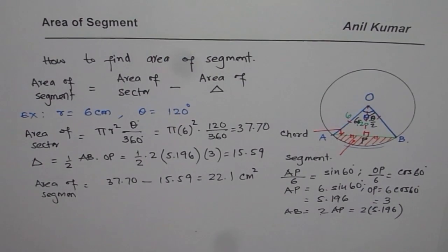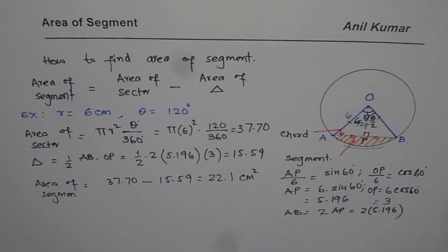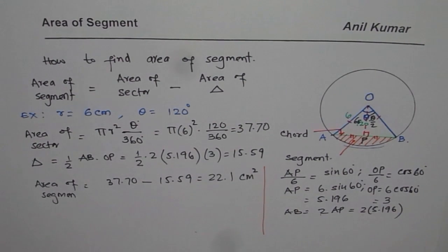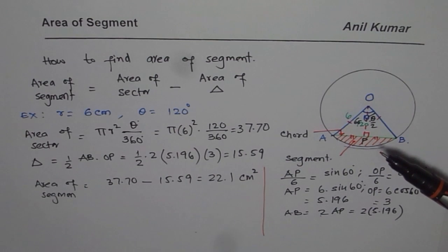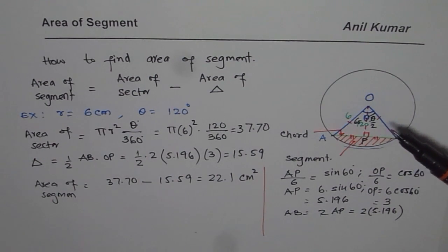I hope with this exercise, which is kind of extensive, you understand how we can find area of a segment and also the concept. So the concept here is to find the area of the segment, we have to find the area of the sector and take away the area of the triangle. To find area of the triangle, we use a bit of trigonometry so that we could find base and height. And that is how you can actually find the area of the segment.